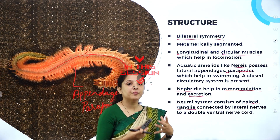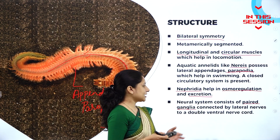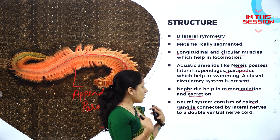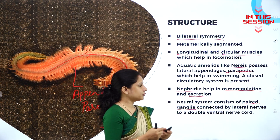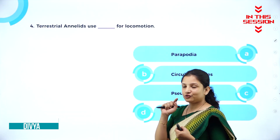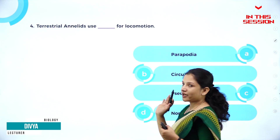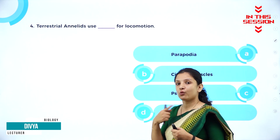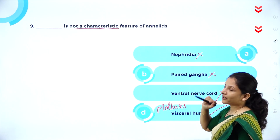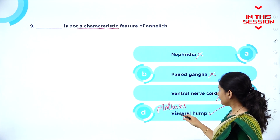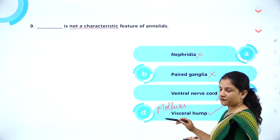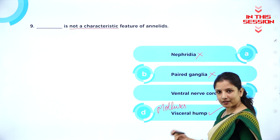Their nervous system is made up of paired ganglia which are connected by lateral nerves, and all these nerves finally end up in a double ventral nerve cord. Terrestrial annelids — don't mark parapodia as the answer because parapodia are present in aquatic annelids, not in terrestrial annelids. That is not a characteristic feature of annelids. The answer here is visceral hump is not a characteristic feature, because all the other three are characteristic features.